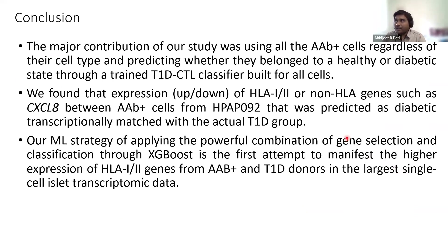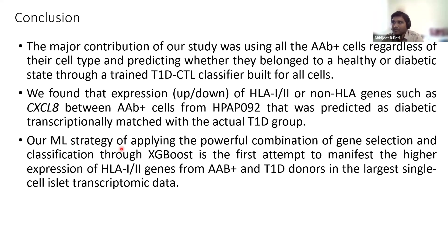In summary, we found that most HLA class I genes and non-HLA genes such as CXCL8 showed expression matching between those autoantibody-positive cells classified as type 1 diabetic — especially from donor HPAP-92. Our method is a combination of gene selection and classification using XGBoost, which is based on gradient-boosted decision trees. This is the first attempt to identify the higher expression of HLA class I and CXCL8 from autoantibody-positive and type 1D donors in the largest available dataset.